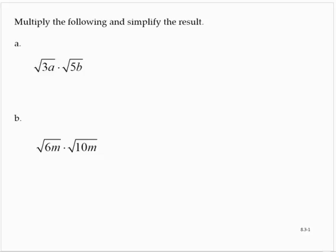So here, we are asked to multiply the square root of 3a by the square root of 5b. Since they're both square roots, I can write that as a single square root of 3a times 5b. And so that's the square root of 15ab. Since there are no perfect square factors under the radical, that is simplified.